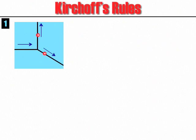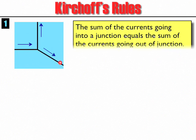Kirchhoff's first rule says the sum of the currents going into the junction equals the sum of the currents going out of the junction. Mathematically, we write that as summation i in equals summation i out. That's at the junction.